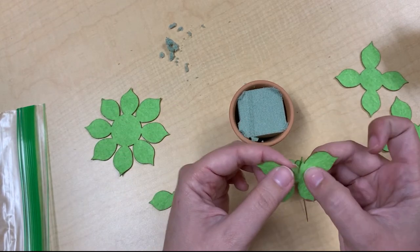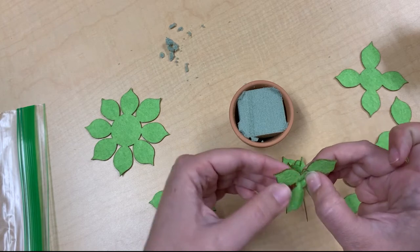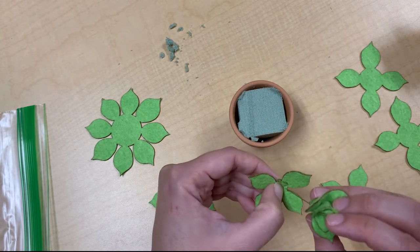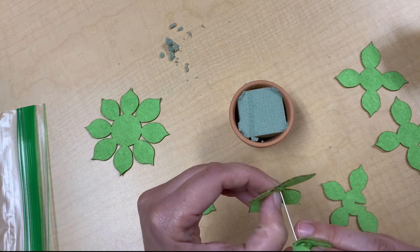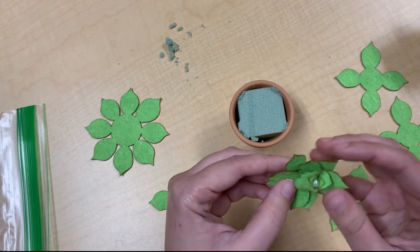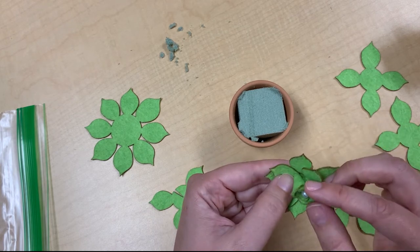You're going to do the same with the next piece. Just fold it over so it overlaps. It's going to help the leaves stick up. Then stick your pin through. You want to stagger the leaves so try to make them alternating.